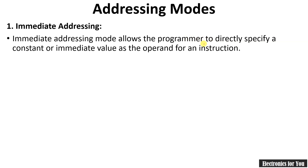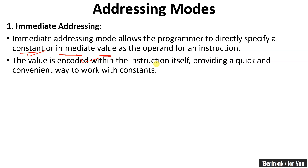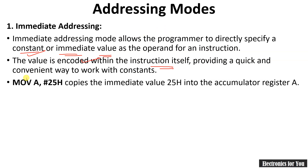The first one is immediate addressing mode, which allows the programmer to directly specify a constant or immediate value. The value is encoded within the instruction itself. The example is MOV A, #25. Note that in 8051 the hash symbol (#) is used to indicate immediate addressing mode — it indicates that this is a data value directly.